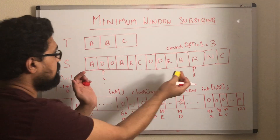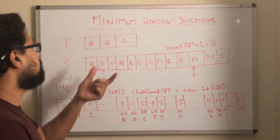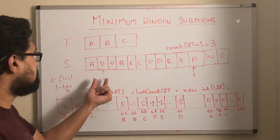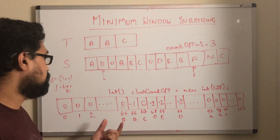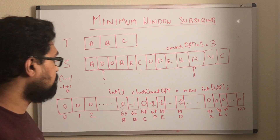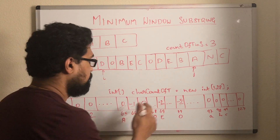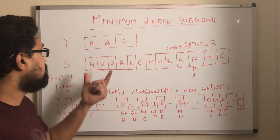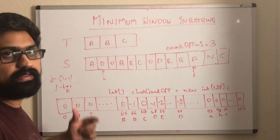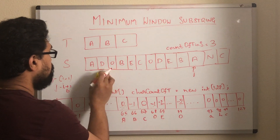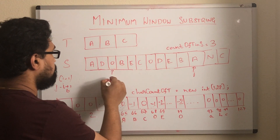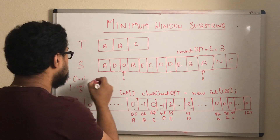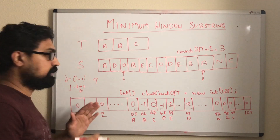So for that, we try to shrink the window and see if we can find a smaller window that contains all characters of t. Let's discard the character pointed by i. We'll increment its count in the array. If it is greater than 0, then we know this is a character seen in t. Here this is not greater than 0. So we can ignore it and move to the next index. Now we have found a new window containing all characters of t. What is the size of this window? It is 9. Is 9 smaller than 6? No.